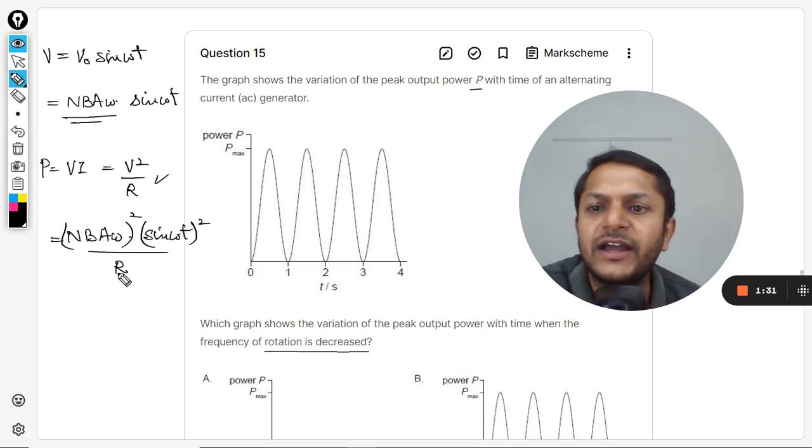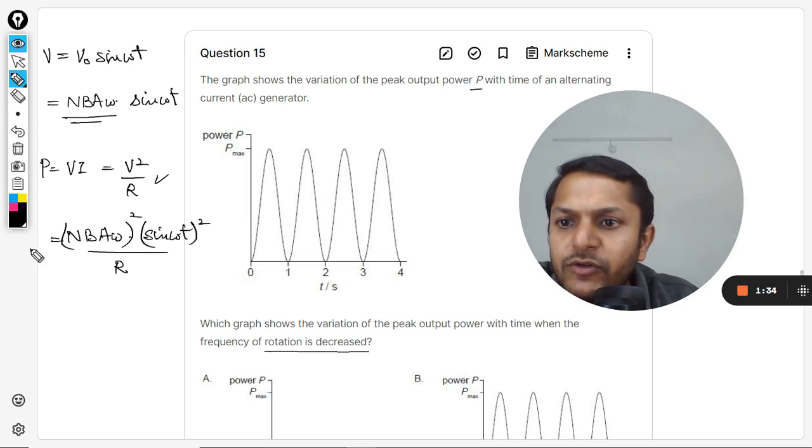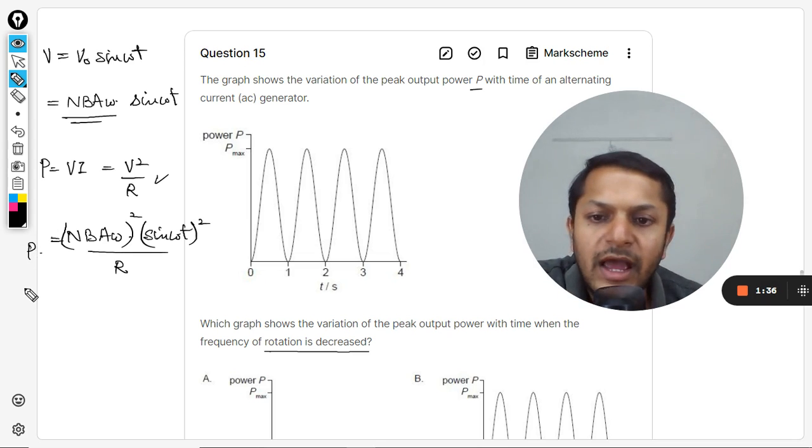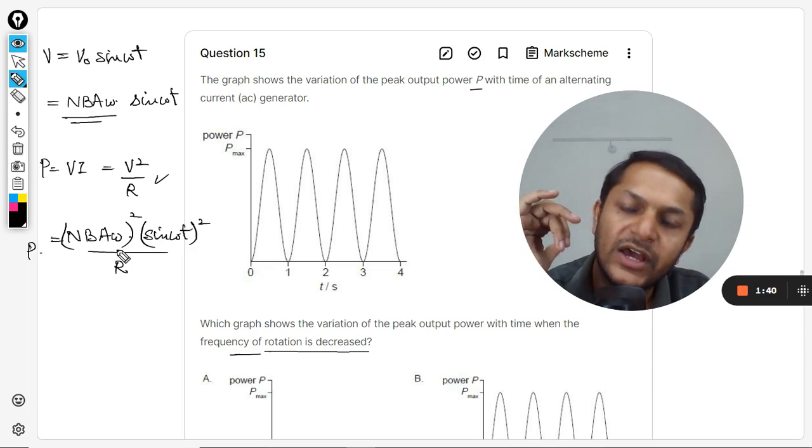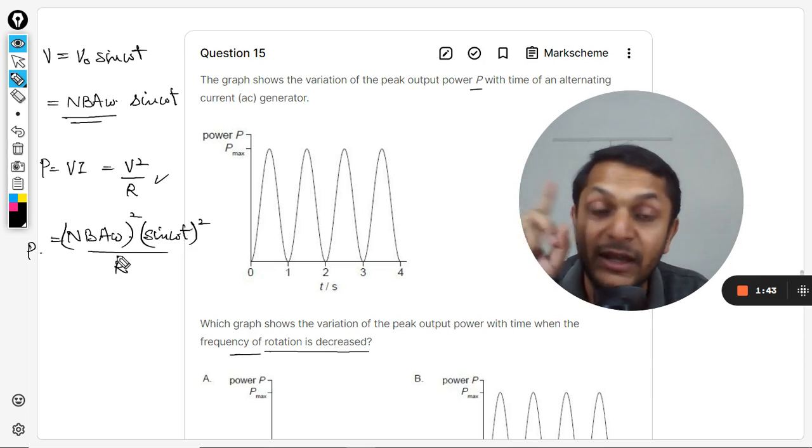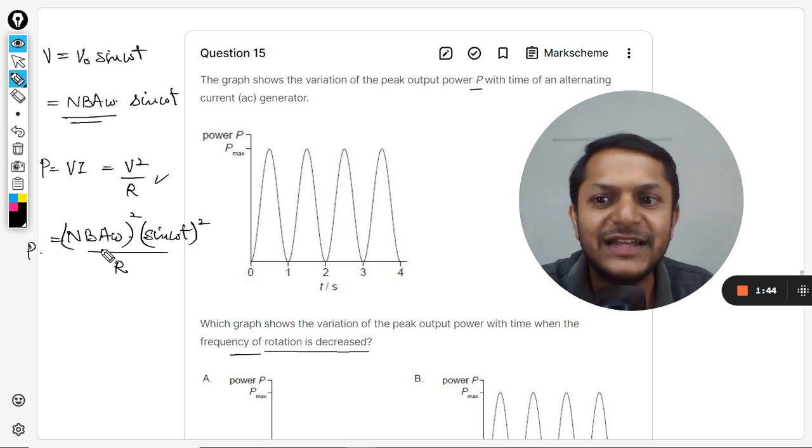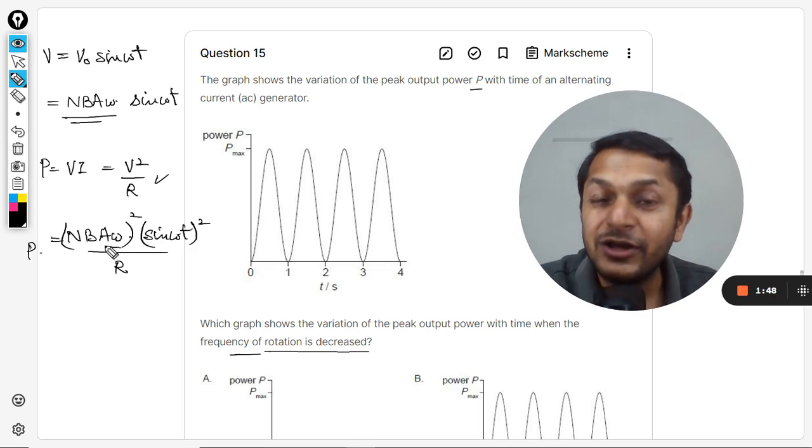And this is divided by the resistance R. So this is the power that they want you to comment on, and they are reducing the omega. So omega is reduced, so we have to comment on what is going to happen.